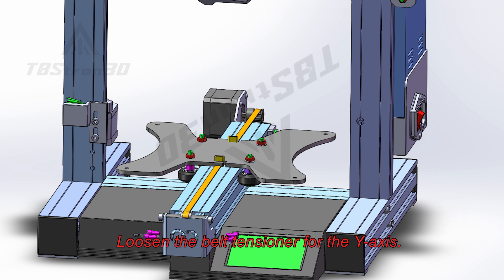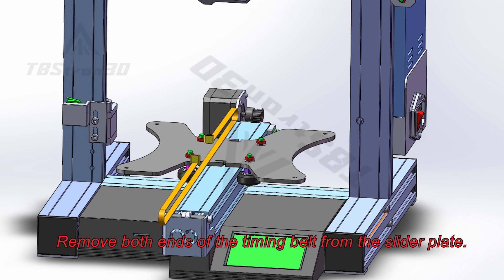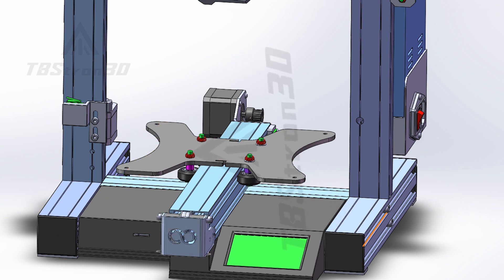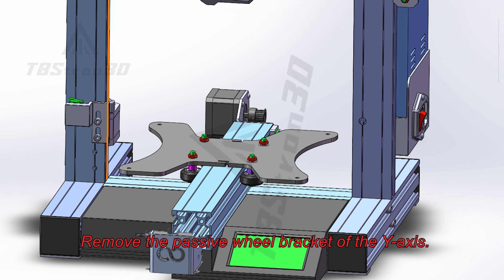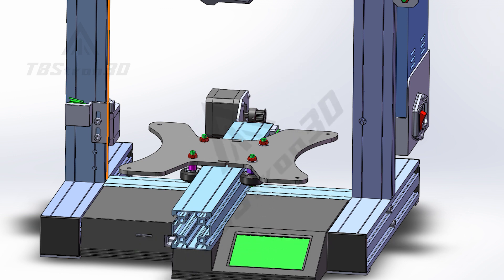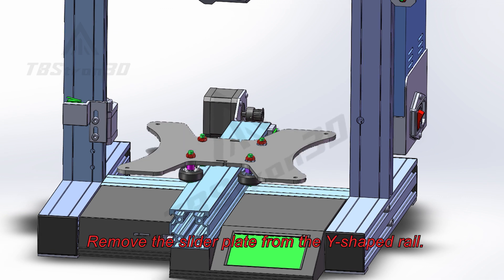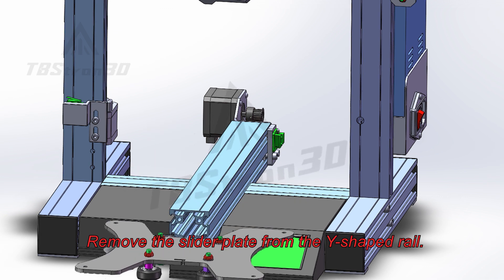Loosen the belt tensioner for the Y axis. Remove both ends of the timing belt from the slider plate. Remove the passive wheel bracket of the Y axis. Remove the slider plate from the Y-shaped rail.